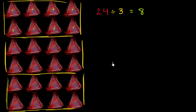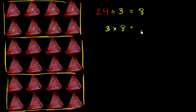Now you might say this is very similar to what we saw in multiplication. In multiplication, we said if we have three groups of eight, we could view that as three times eight and get 24. And you are exactly right — we could also write that three times eight, so if I have three groups of eight, that is going to be equal to 24. We started with 24 things, divided it into three equal groups, got eight in each group. Or you could say three equal groups of eight is equal to 24.